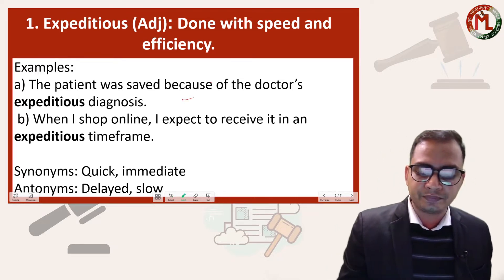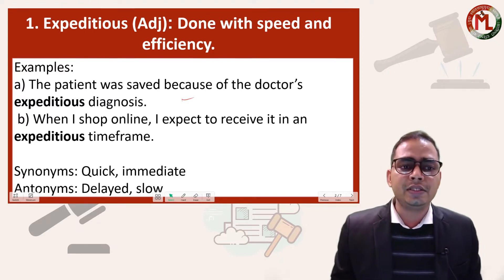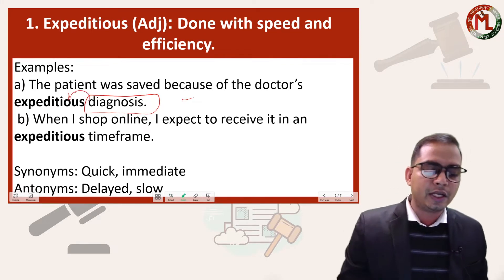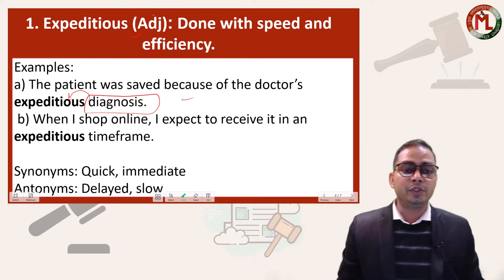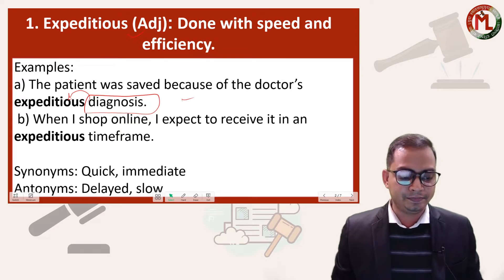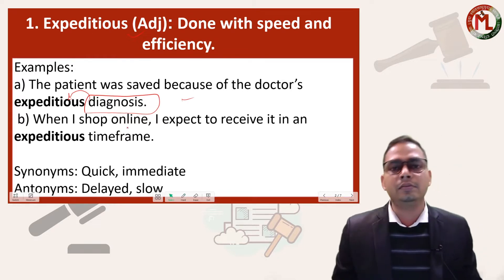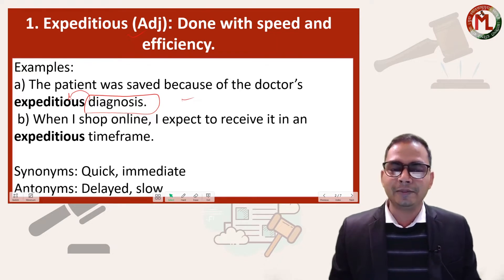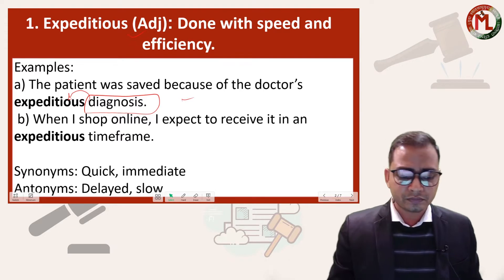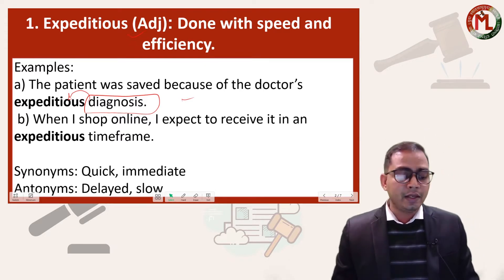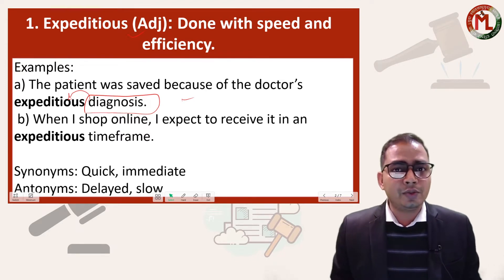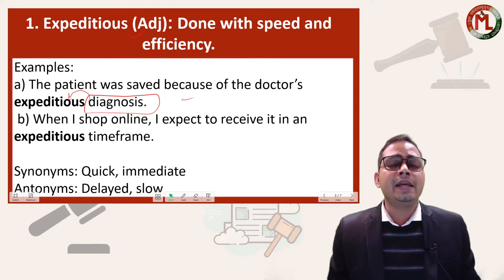Let's understand this word with examples. The first sentence says: 'The patient was saved because of the doctor's expeditious diagnosis' — here 'expeditious' is an adjective qualifying the noun. The second example: 'When I shop online, I expect to receive it in an expeditious time frame.' The adverb form is 'expeditiously.'